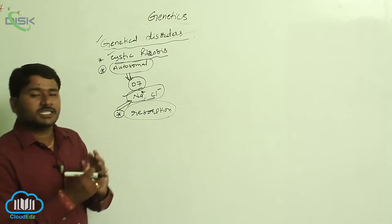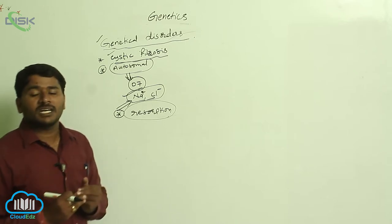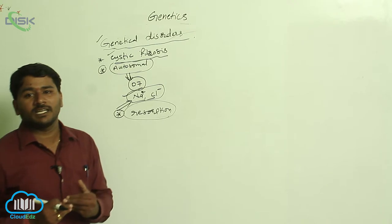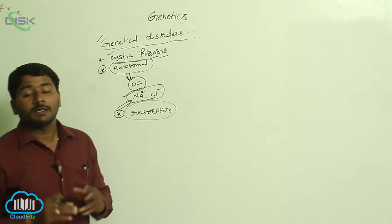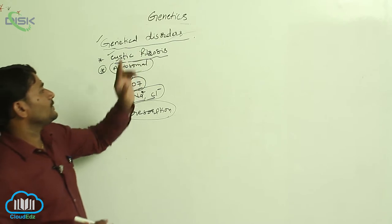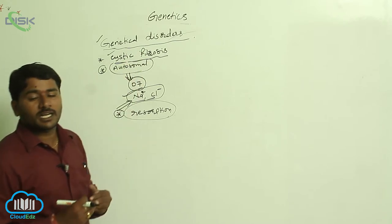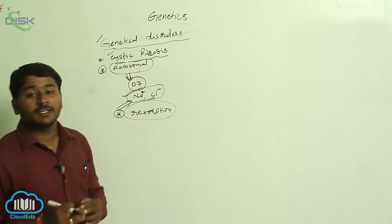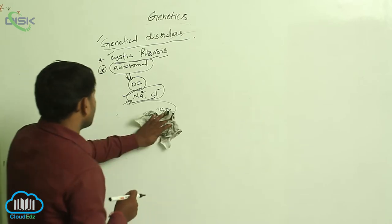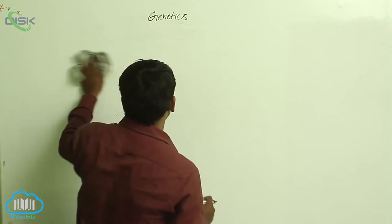When resorption takes place, the gastrointestinal tract as well as the respiratory epithelium becomes more viscous, leading to cystic fibrosis and ultimately death of the individual. These are the genetic disorders we have discussed so far.